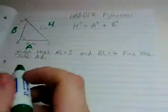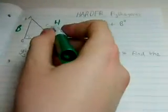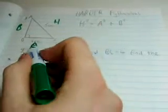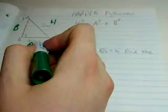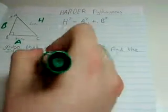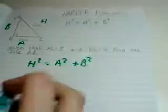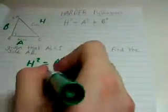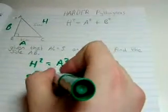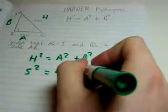You have the side H, and you have A. What you're going to do is sub in 4 and 5 in the places of H and A. H squared equals A squared plus B squared. H equals 5. So 5 squared is equal to 4 squared plus B squared.